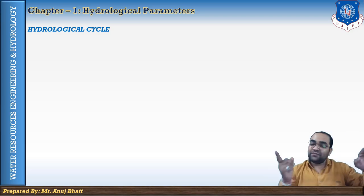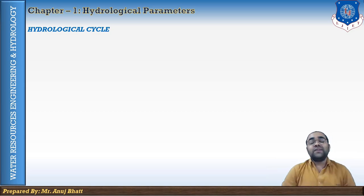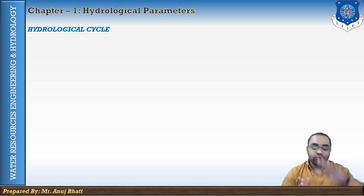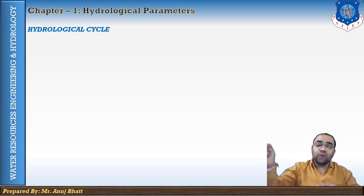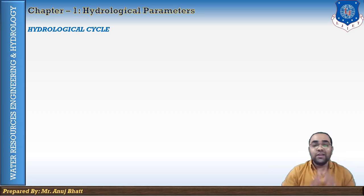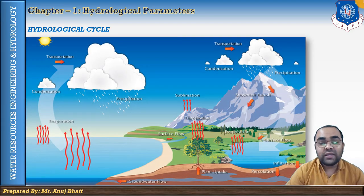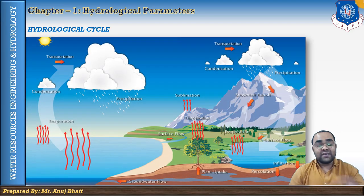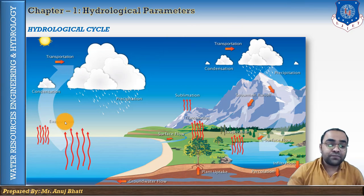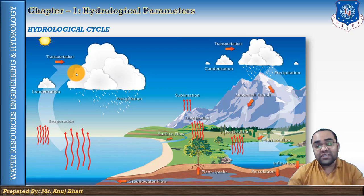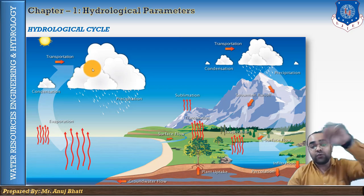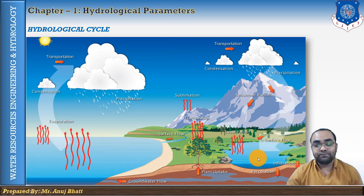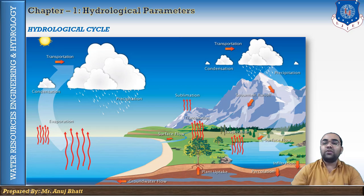The hydrological cycle is a descriptive term applied to the circulation of water from the ocean to the atmosphere, to the ground, and back to the ocean again. There is no starting or end point because it rotates continuously. Let me show you an image — you can see the cycle starting from the ocean, going up to the sky or atmosphere, and then coming back down to the ocean. This is a schematic representation of the hydrological cycle.